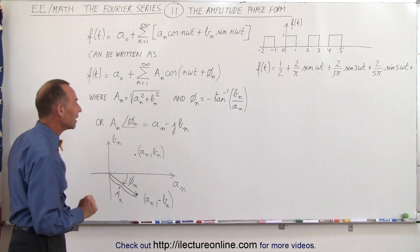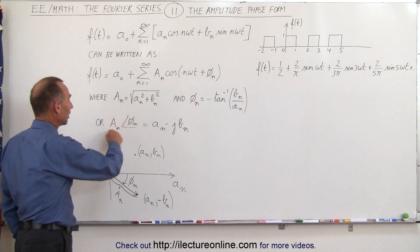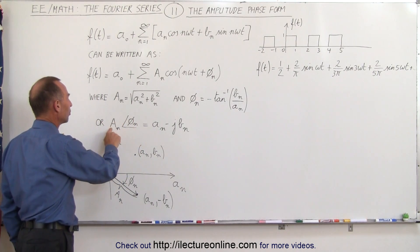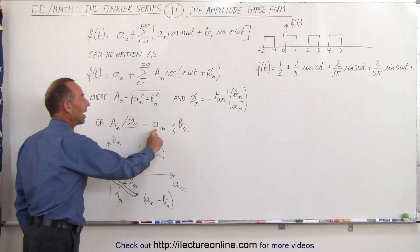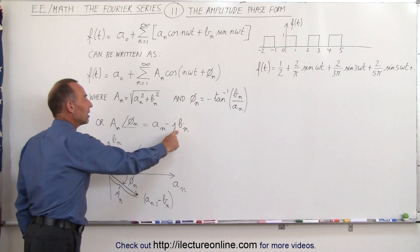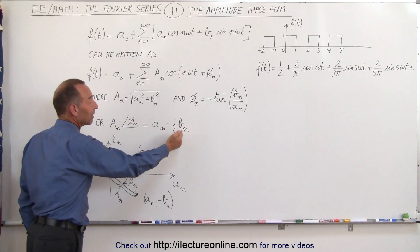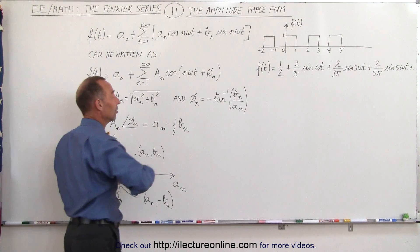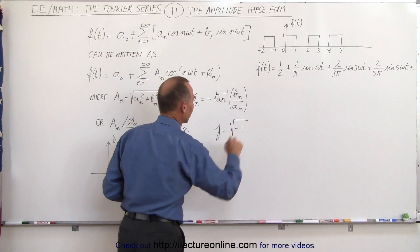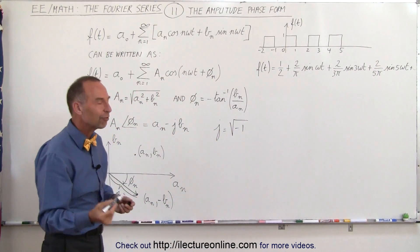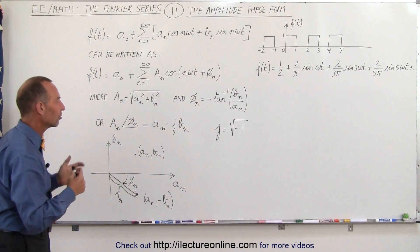But notice that if we write it like this where we have the amplitude and the phase, that can be written as the complex format of the number, which is a sub-n minus the square root of negative 1, j, times b sub-n. Remember in this case that j is simply equal to the square root of negative 1. We also use the letter i for that, but typically in electronics books you'll find j's instead of i's.